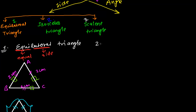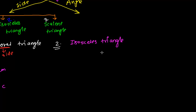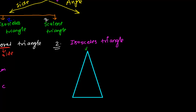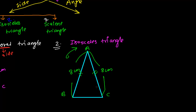Now let's talk about the second type: the isosceles triangle. An isosceles triangle is one in which two sides are equal. For example, suppose I have triangle ABC where side AB and side AC both have the same measurement — say, 8 centimeters. Then triangle ABC is an isosceles triangle.